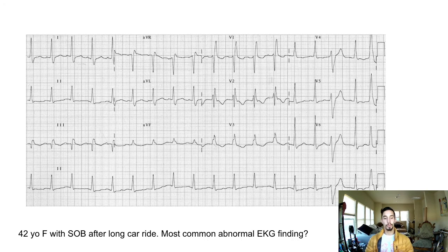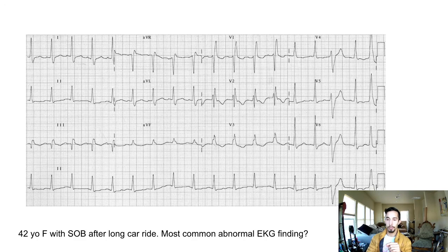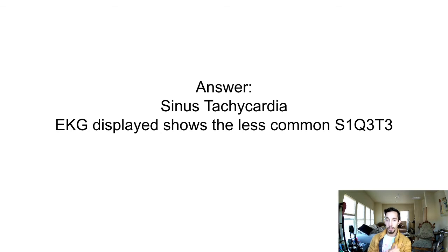42-year-old female with shortness of breath after a long ride — what's the most common abnormal EKG finding? If you said sinus tachycardia, you'd be correct, because this patient likely has a pulmonary embolism. But the EKG here shows the very specific, less sensitive finding of S1Q3T3 — an S wave in lead 1, a Q wave in lead 3, and an inverted T wave in lead 3. On chest X-ray, you'd most likely see nothing, because PEs are very hard to find.